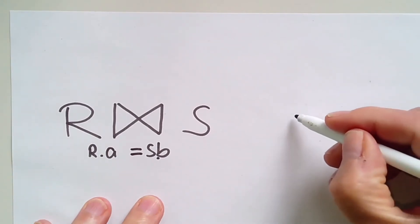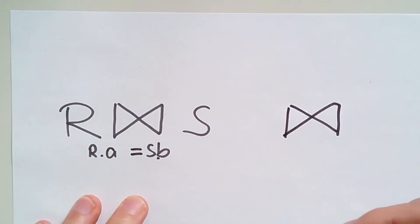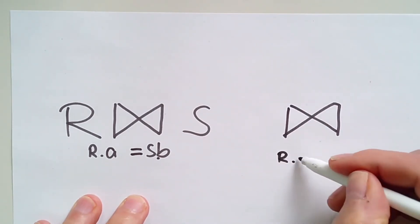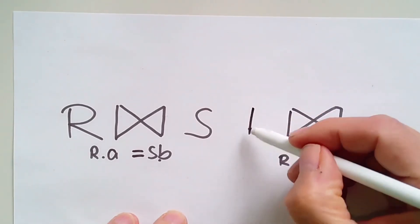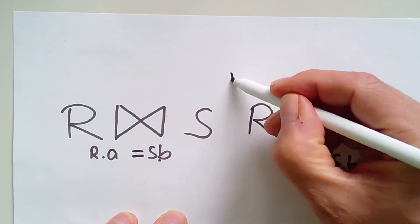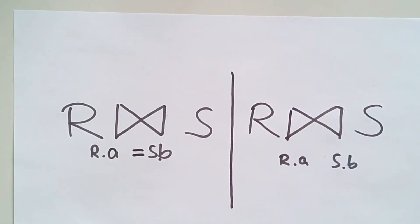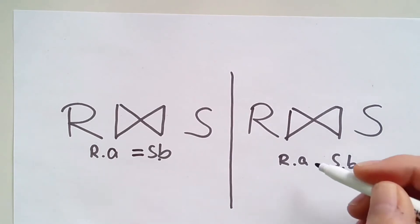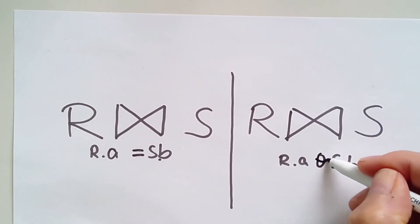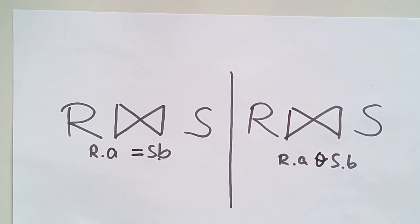We will also look at the generalized form — the so-called theta join — where we combine rows based on the comparison of two column values in the participating tables R and S. We wouldn't demand equality between the A and B values here; any comparison operator between A and B — less than, greater than, less than or equal, not equal — all such comparison operators would be admissible. That would be the so-called theta join.